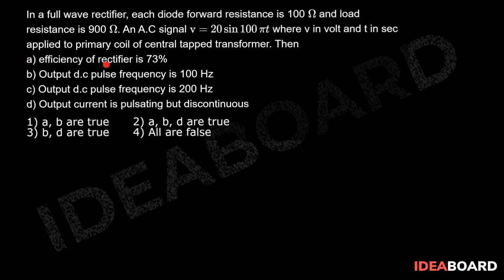The given options are: (a) efficiency of rectifier is 73%, (b) output DC pulse frequency is 100 Hz, (c) output DC pulse frequency is 200 Hz, (d) output current is pulsating but discontinuous. We need to check which statements are correct.